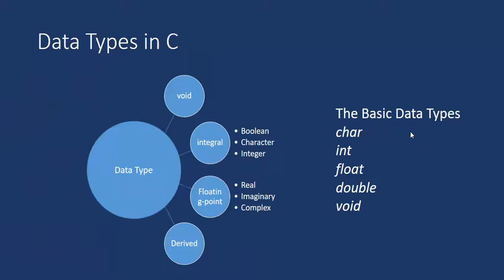What are the basic data types in C? char, int, float, double, and void. These are the basic data types in C.